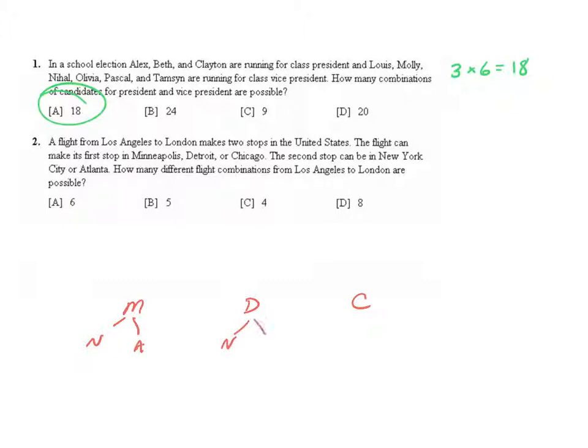So New York or Atlanta, New York or Atlanta. How many different flight combinations from Los Angeles to London are possible? So we have 1, 2, 3, 4, 5, 6. So the answer is A, six.